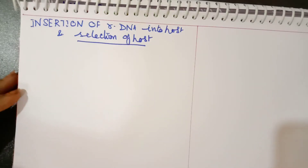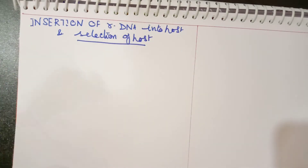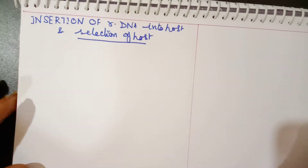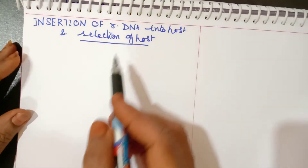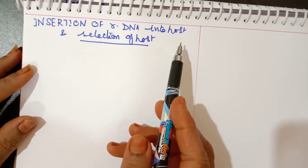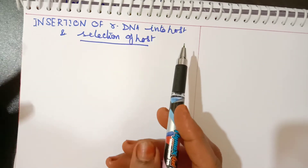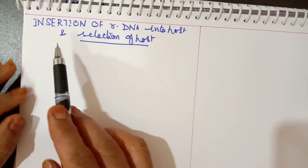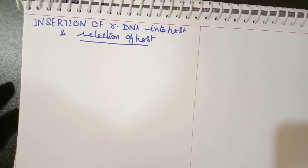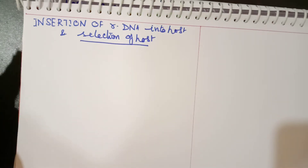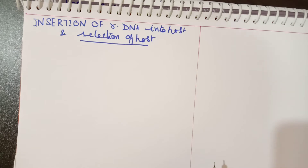Welcome back, dear students. In this video I will be discussing about insertion of rDNA into the host cell. The host organism is E. coli, and we will also cover the selection of transformed host cells. Once the organism is inserted, the host cells are transformed, and then there are methods to select the transformed host cell.